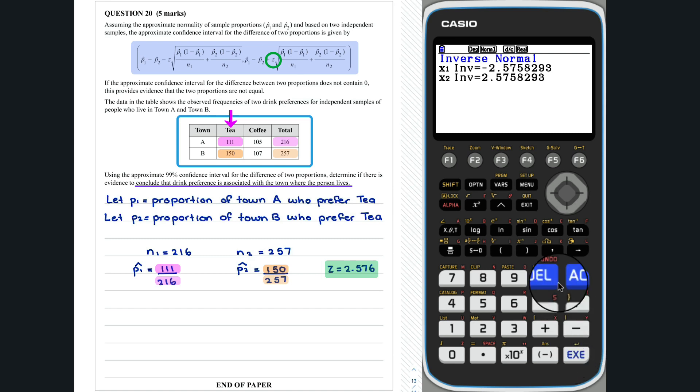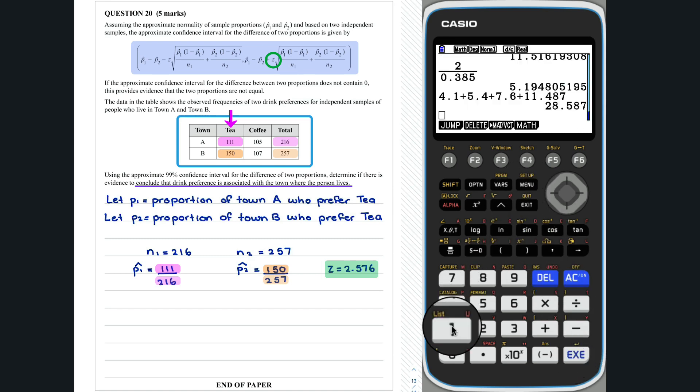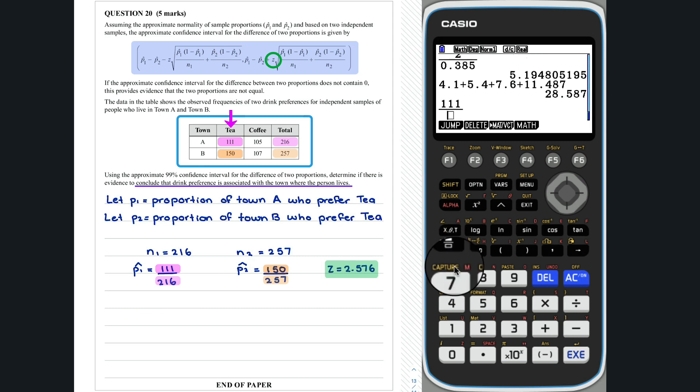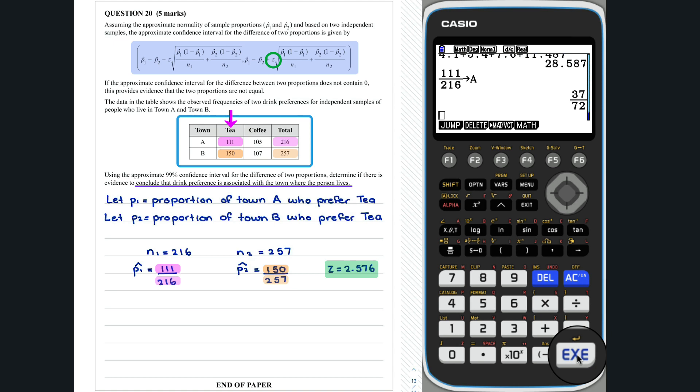We can now calculate our confidence interval. To reduce the chance of typos in our calculation, we will make use of the calculator's ability to assign a numerical value to a letter. Let's assign P1 hat as A. This can be done as follows. P2 hat can be assigned to B. We will assign 2.576 to Z. Our confidence interval can now be evaluated as follows.